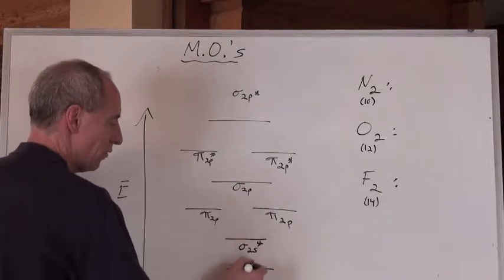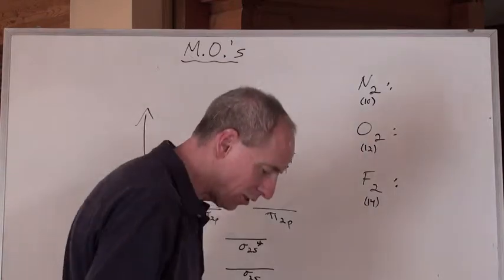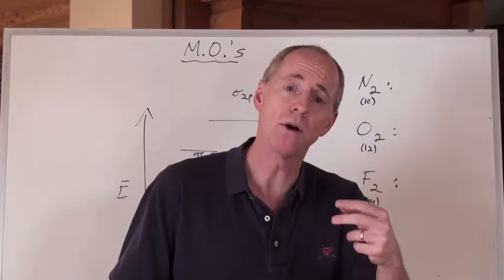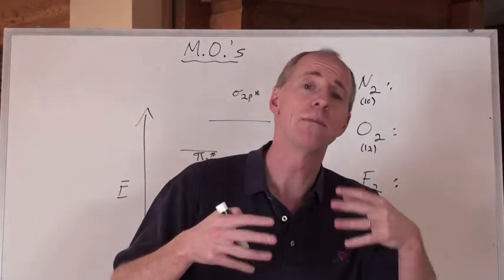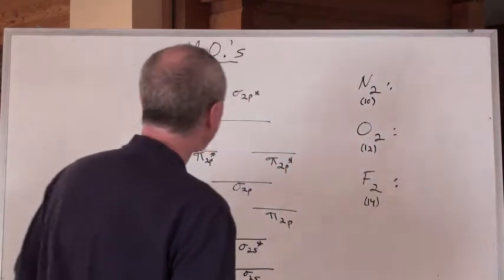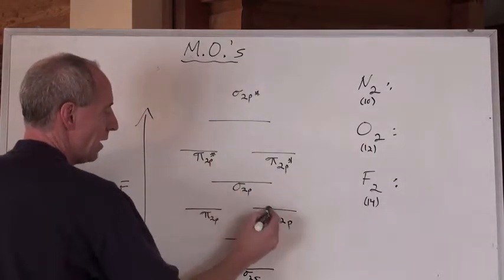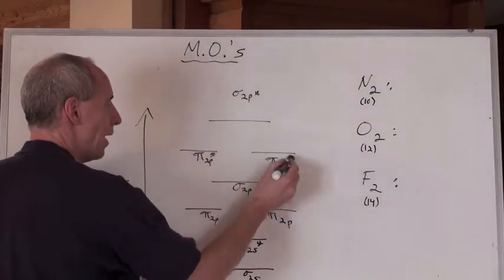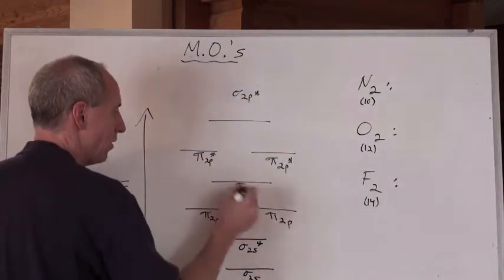At the 2s we fill these sigmas first, and then when we get to the 2p's, we know that we have pi bonds and we can have sigma bonds. We can form two pi bonds and one sigma bond when we have something like a triple bond, right? Remember that from the previous discussion on molecular orbitals and hybridization. So we can fill the pi 2p's, then the sigma 2p, and then the pi 2p anti-bondings, and the sigma 2p anti-bondings. These are the ones to memorize.